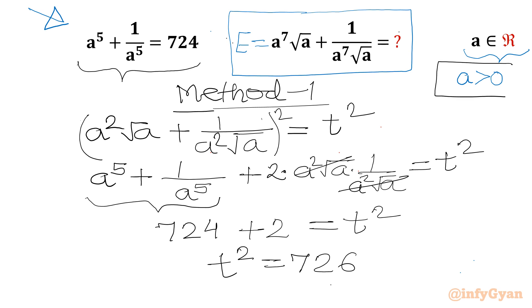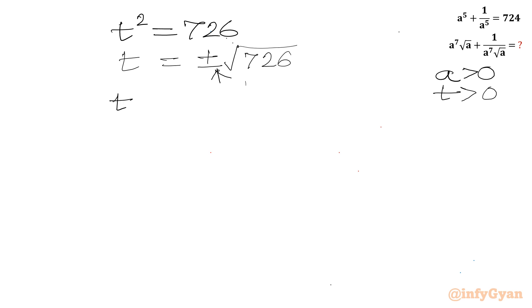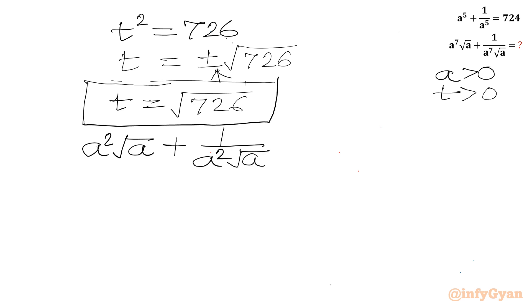Now since a is positive, t will also be positive. Taking the square root of both sides, t = ±√726, but since a is positive, t must be positive. So we reject the minus sign and t = √726.